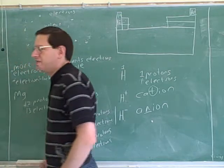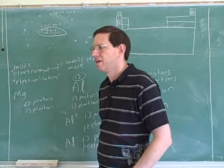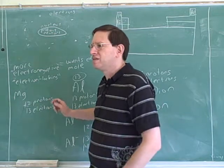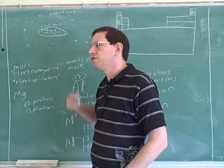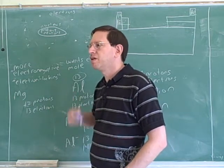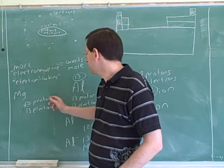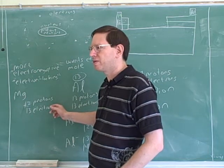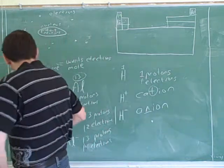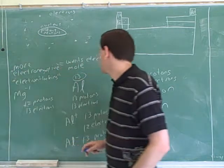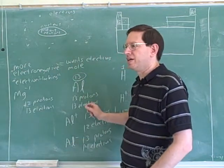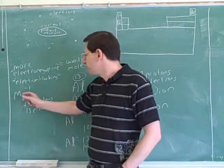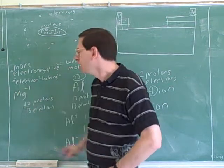And what would be the charge on the magnesium? Would it be positive 2, positive 1, 0, negative 1, or negative 2? Negative 1 — that's right. So if I actually just took one proton away from here, and I didn't change the electrons, I would go from aluminum to magnesium minus.